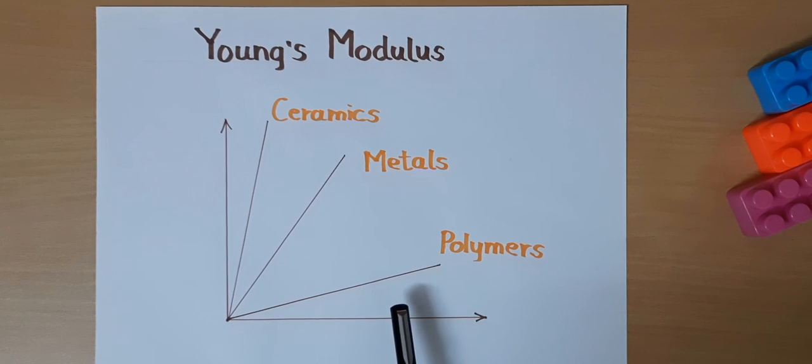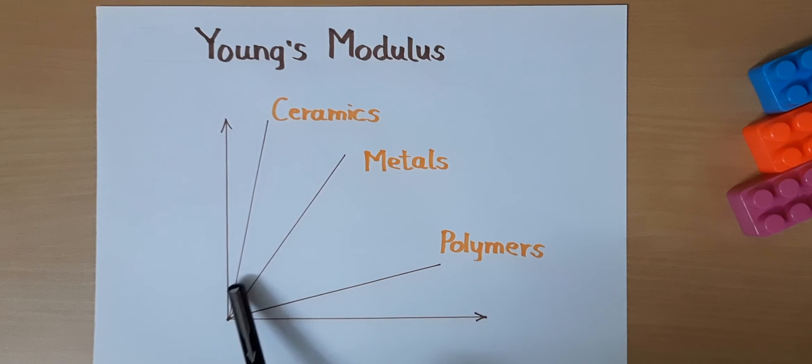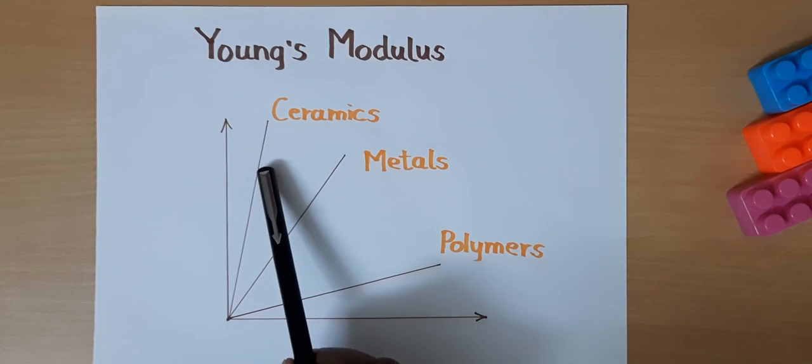As earlier explained, each material has a different Young's modulus because different materials have different stress-strain curves, and that defines different Young's moduli. Here I have drawn a variation of Young's modulus. Polymers like rubbers have very low Young's modulus, while metals have intermediate, and ceramics have higher Young's modulus.